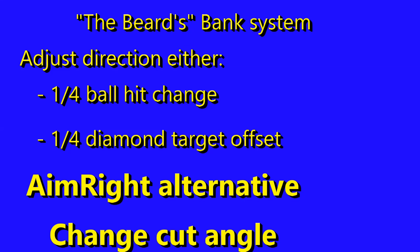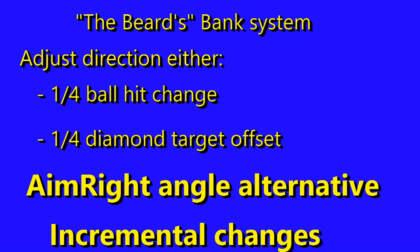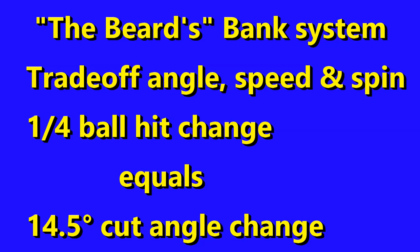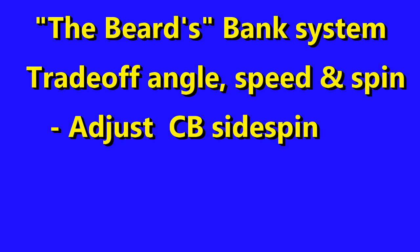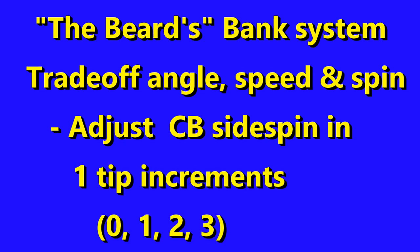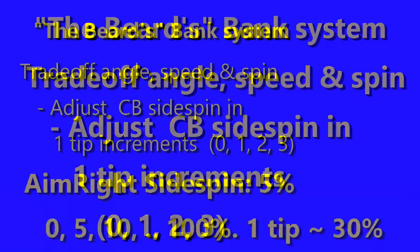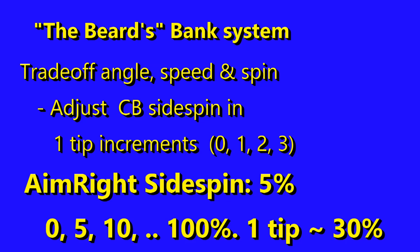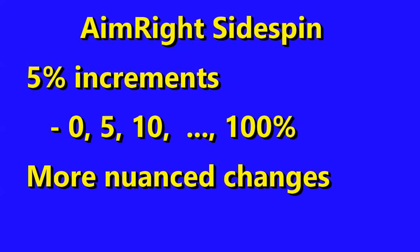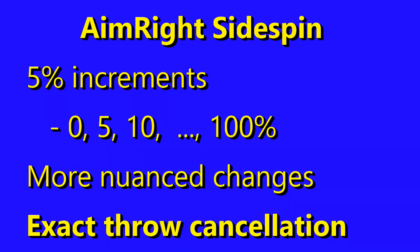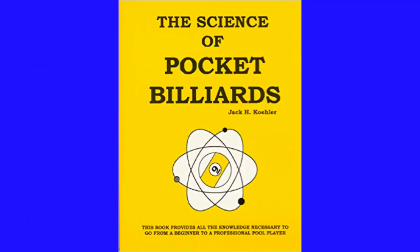Instead of varying the fractional ball hit or the diamond target as suggested in Banking with the Beard, instead make an incremental change to the cut angle. His normal adjustment is a quarter ball hit, which I translate into a 14.5-degree cut angle change. Freddy the Beard also suggests measuring and applying side spin in one-tip increments. I'd suggest that an AimRight-trained player can adjust in 5% increments, allowing for more nuanced adjustments, including exact cancellation of cut-induced throw, as Jack Kohler suggests in his Science of Pocket Billiards.